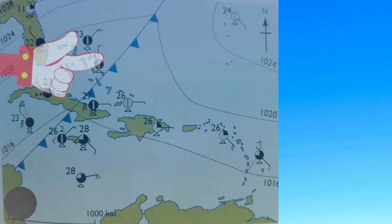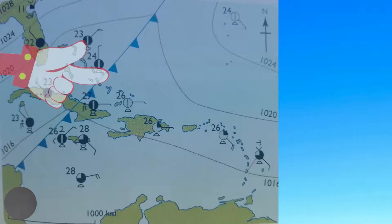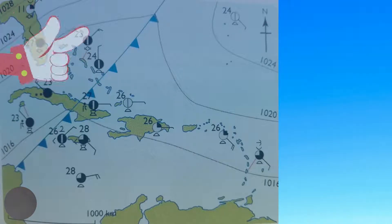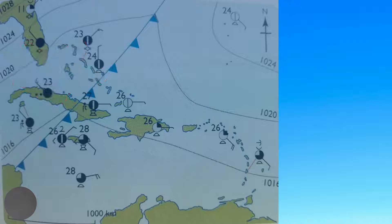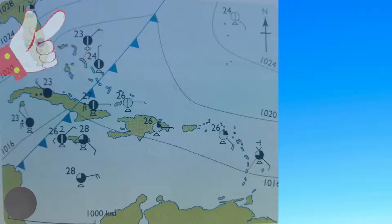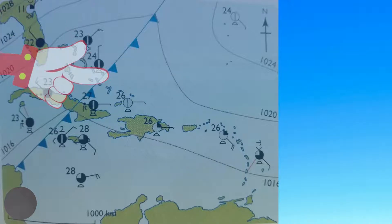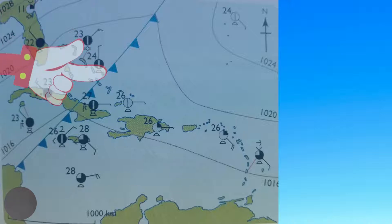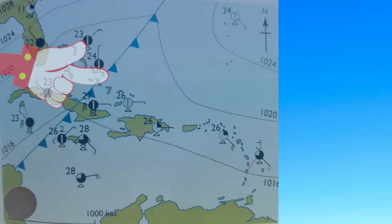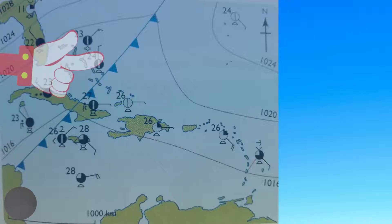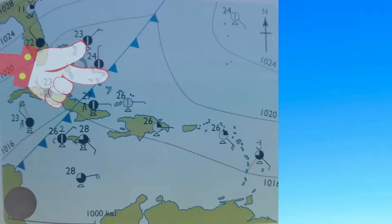On a weather map, we can identify the cold front by a blue line with triangles pointing in the direction of the movement of the system. In the case of this map, we can see that the cold front is moving in a southeasterly direction.